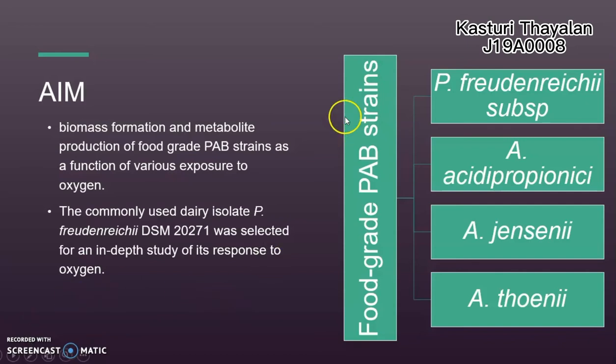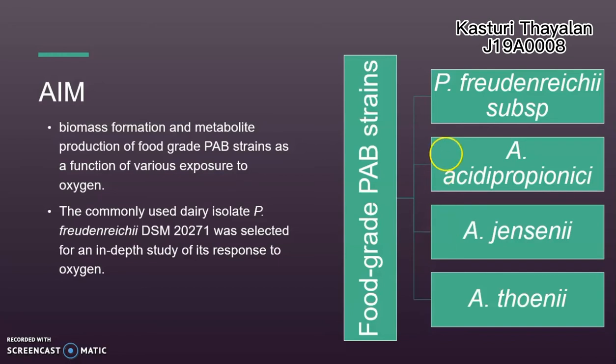These are the four species of PAB used in this study. The 16 strains of propionic acid bacteria used for the screening are classified from these four species. However, the commonly used dairy-isolated Propionic bacterium prudentii was selected for an in-depth study of its response to oxygen.